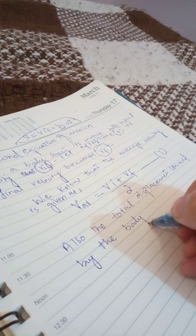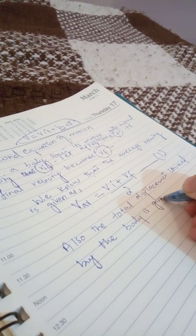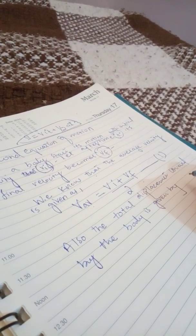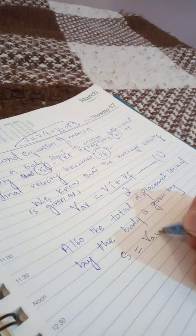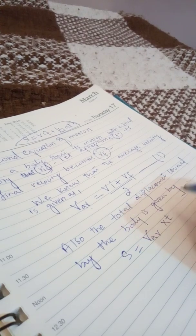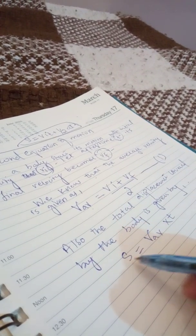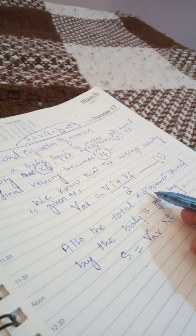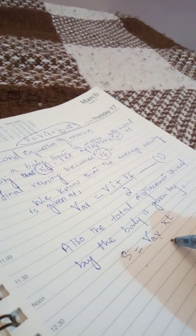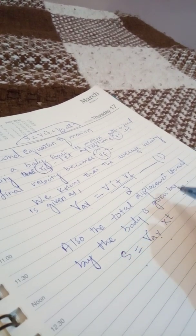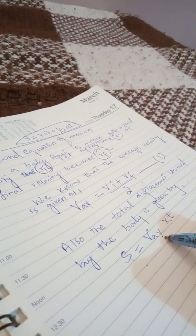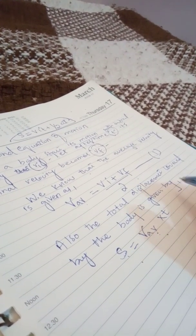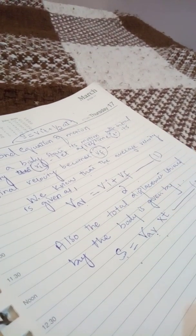The total displacement covered by the body is given by s = average velocity multiplied by time. That is, s = VAV × t. This is the formula of total displacement covered by the body, and this is the second step.